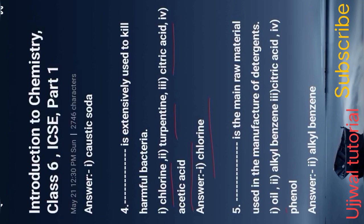Question five: the main raw material used in the manufacture of detergent. Options: oil, alkyl benzene, citric acid, kerosene. Option 2, alkyl benzene, is the right answer.